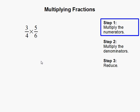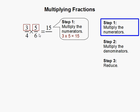Step 1, multiply the numerators. The numerators are 3 and 5, and we multiply them to get 15.